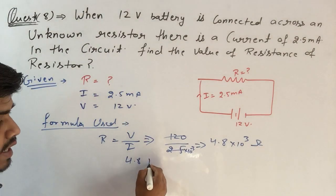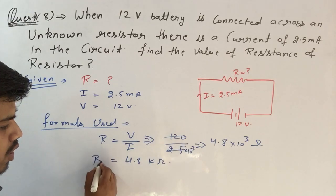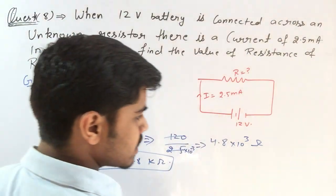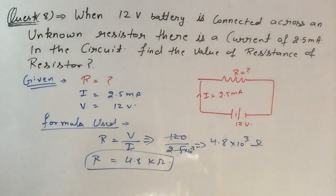Or we can say that 4.8 kilo-ohms. Kilo is 4 times 10 to the power 3. So this is the solution for question number 8.